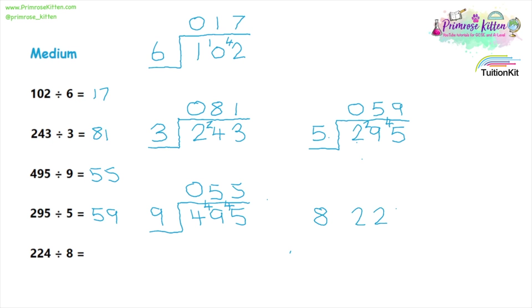224 divided by eight. How many eights will go into two? That is zero, so we need to carry the two over. How many eights go into twenty-two? Eight times two is sixteen, and then we'll have six to carry over. So how many eights go into sixty-four? And that is eight.